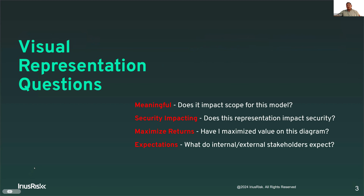Visual representation considerations — what is most important to me and why am I including those in this particular diagram? Number one: is it meaningful? Does it impact the scope for this model? There are different ways to diagram. If I'm focused specifically on the security of an SSO integration or the identity provider involved in that SSO process, I may have a much more detailed diagram than if I just wanted to show that I've got an outside application reaching out to that SSO integration. It depends on what's most important for this diagram.